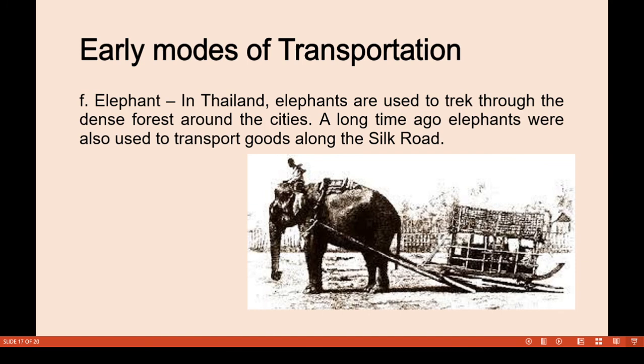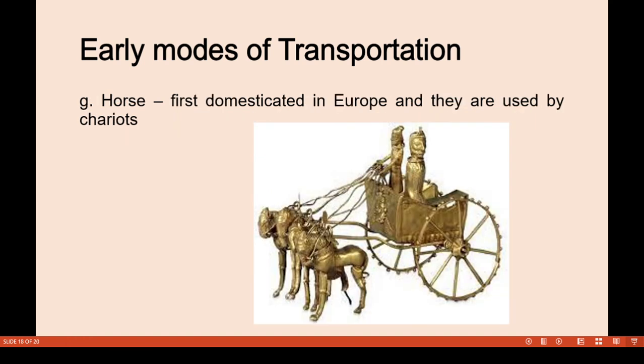The elephant: in Thailand, elephants were used to trek through dense forests around cities. Long ago, elephants were also used to transport goods along the Silk Road. This illustration shows an example of an elephant carrying loads — this type of animal also carries very heavy loads.